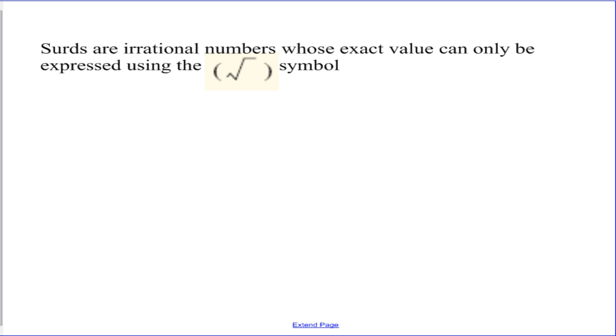A surd is an irrational number and its value can only be expressed accurately using the square root symbol. When we say it can only be expressed accurately, we mean that you can write out a surd as it's rounded to 5, 10, 100 decimal places, but that is never going to be as accurate as writing the surd as a square root sign.